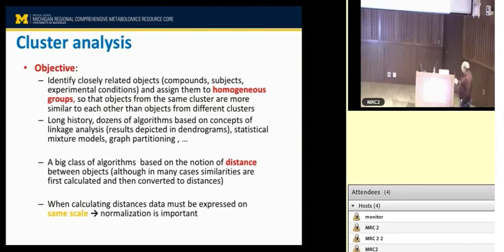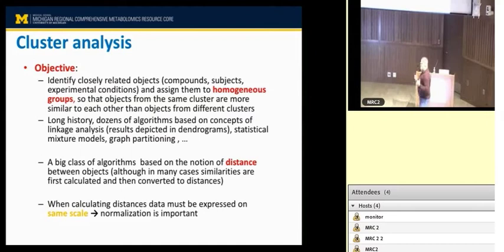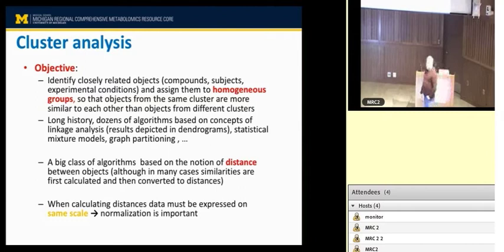The difference with PCA is that if, by chance, along those directions of maximum variability, you see a nice clustering structure, PCA will capture it. But it's very easy to construct counterexamples where there is a nice clustering structure that's not aligned with the directions of maximum variability. That's why PCA can be a hit-and-miss from a classical analysis perspective, and that's why there are much better techniques.